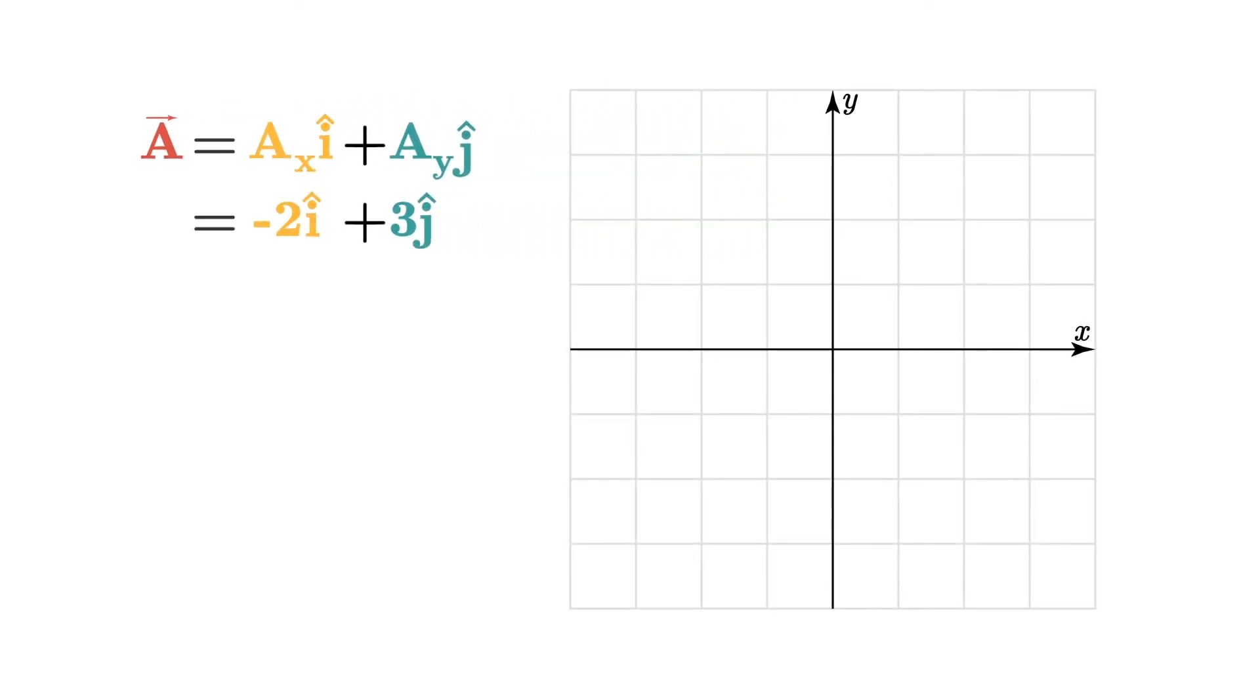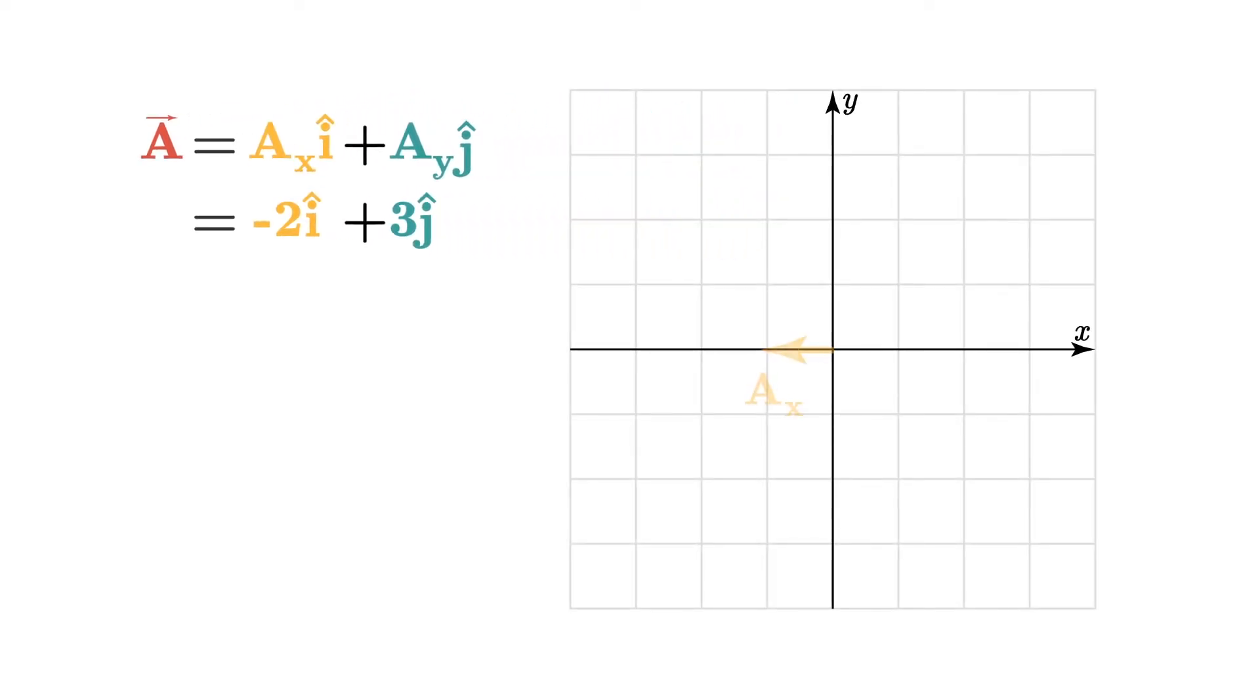So first of all let's draw it out on our grid like this. And let's find the magnitude. The magnitude we can find through the Pythagorean theorem. It's just the square root of the x component squared plus the y component squared.